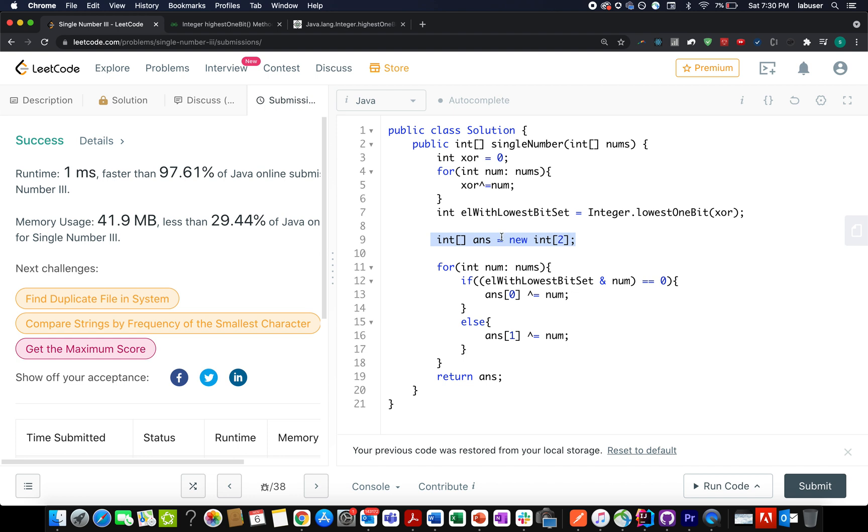Then I created an answer array of size two. And then I again iterate over the complete input array dividing each one of them into two groups. I XOR the current element with the element that I extracted from the lowest bit set of the XOR element. And if it turns out to be zero, that means it will lie in that column where the bit is unset.